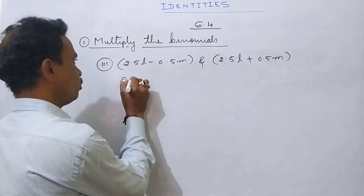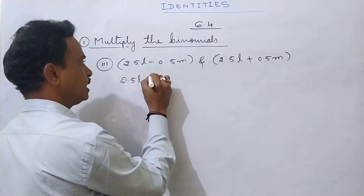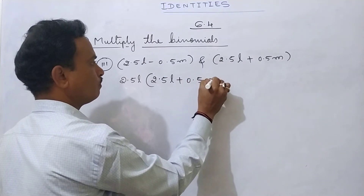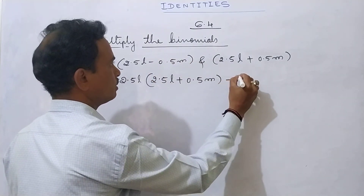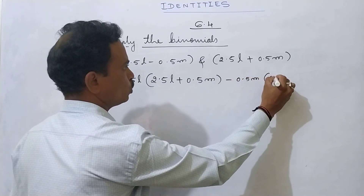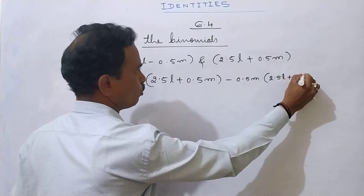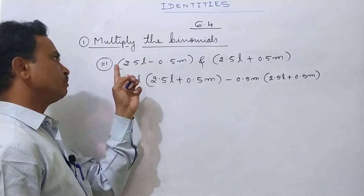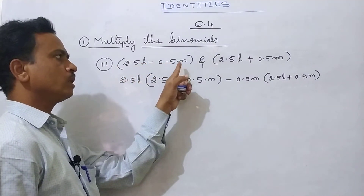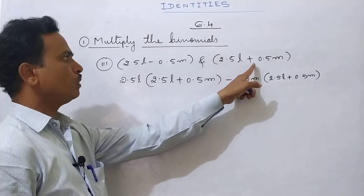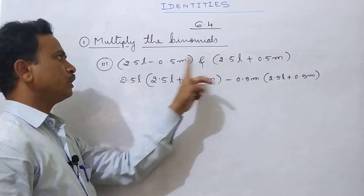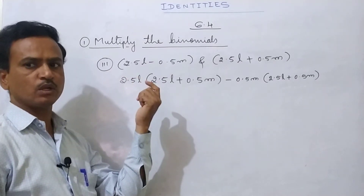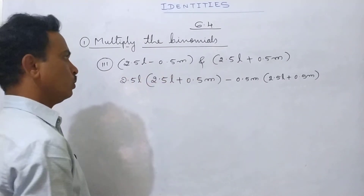Third question: (2.5l - 0.5m) and (2.5l + 0.5m). First binomial first term is 2.5l, second binomial is 2.5l + 0.5m, then minus 0.5m into (2.5l + 0.5m). We can recognize this as the (a + b)(a - b) formula, which equals a² - b². We can use that method.